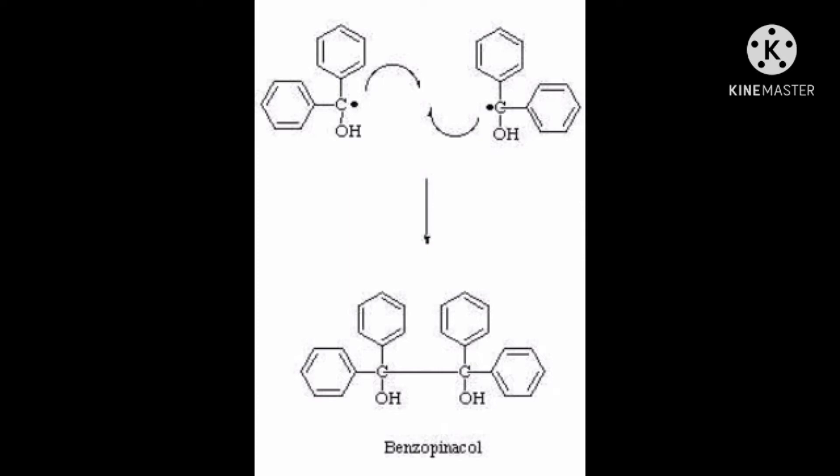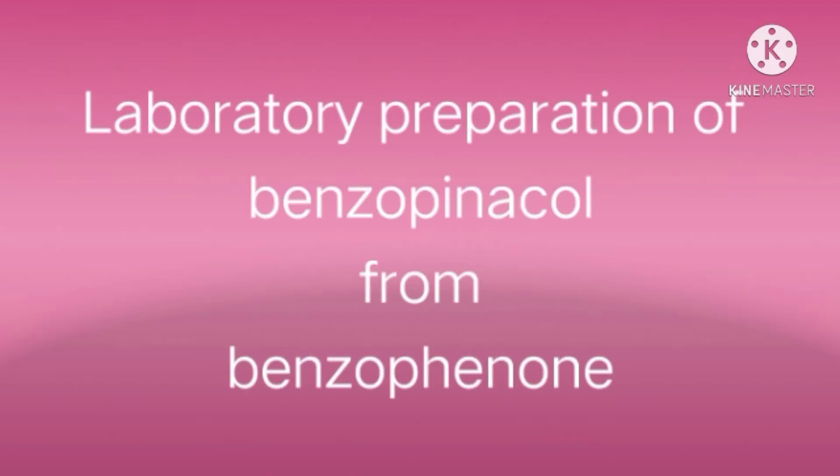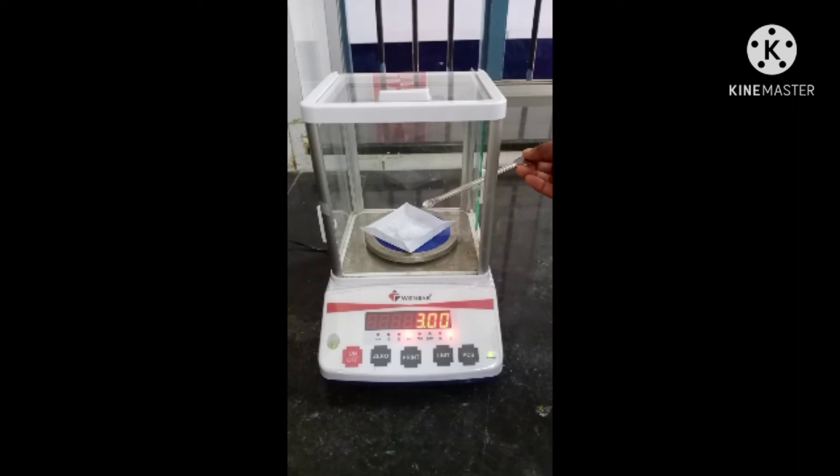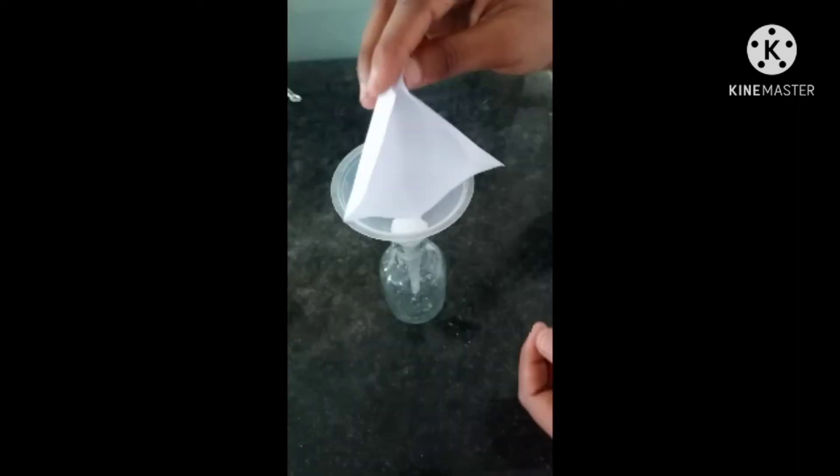Let's do the laboratory preparation of benzopinacol from benzophenone. For this, about 3 grams of benzophenone is allowed to dissolve in 5 ml of isopropyl alcohol with gentle warming.